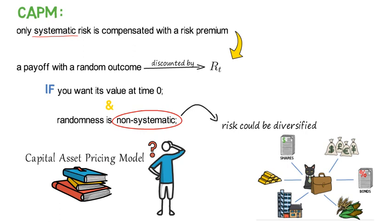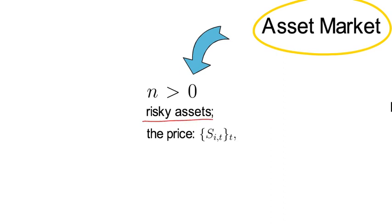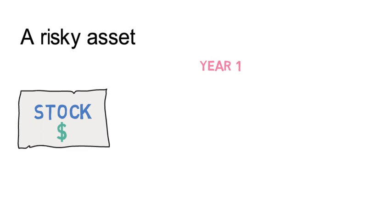Now for the remainder of this video, I want to talk about the risky assets, S_it. First, a risky asset like a stock is a claim on all future dividends of a firm.